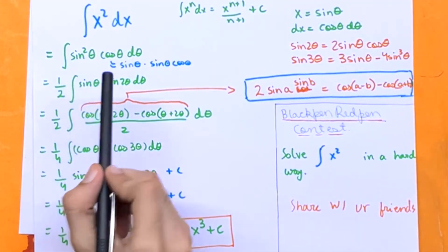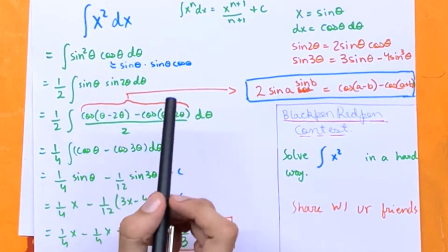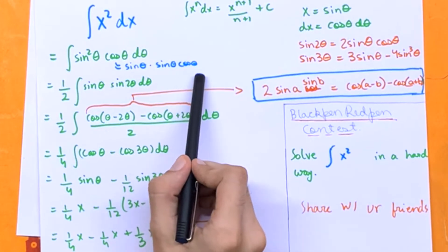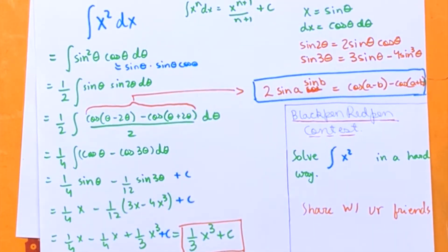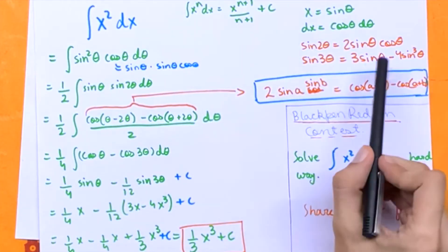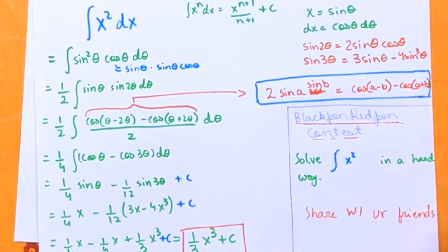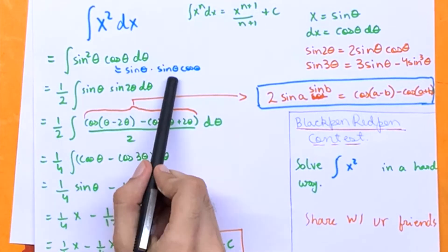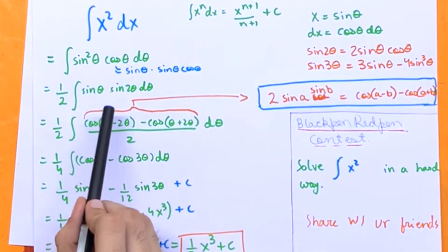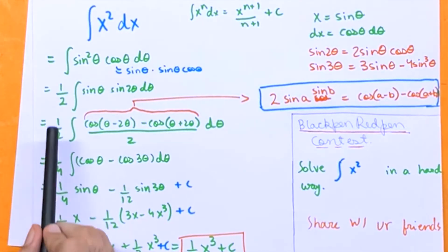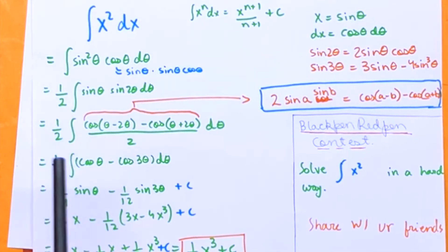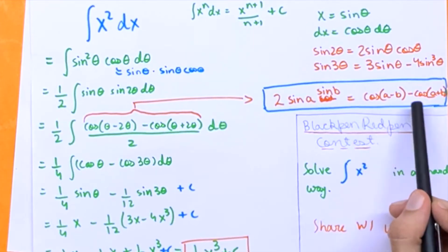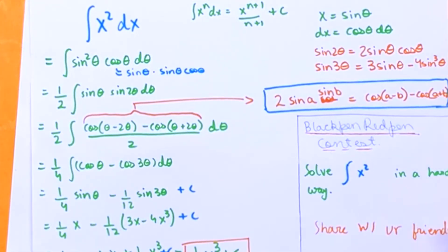So we get sin squared theta times cos theta d theta, which we can write as sin theta times sin theta cos theta. We're going to use the formula sin 2 theta is equal to 2 times sin theta times cos theta, so we can write sin theta cos theta as sin 2 theta over 2. Now we're going to use the formula 2 sin a times sin b is equal to cos(a minus b) minus cos(a plus b).